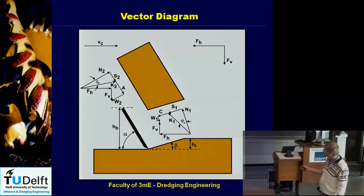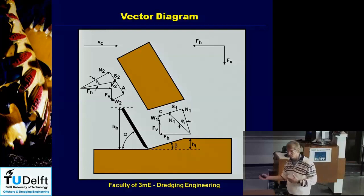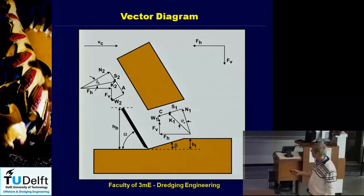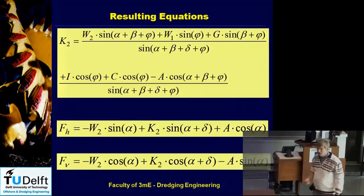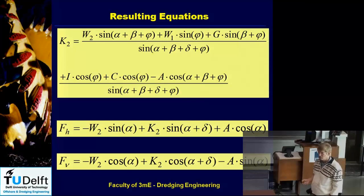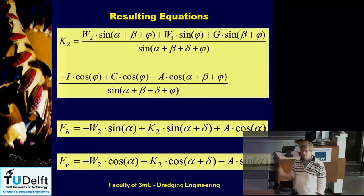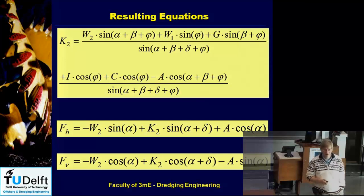On the blade, you can make the same vectorial sum of all the forces, getting a feeling for which force is big and which is small. In the final equations, you can see that we divide by the sine of the sum of all the angles involved: alpha (the blade angle), beta (the shear plane angle), delta (the external friction angle), and phi (the internal friction angle).